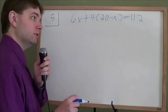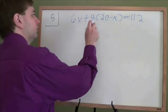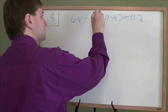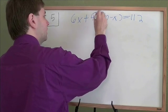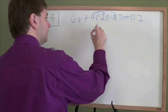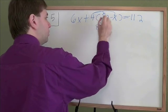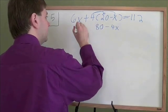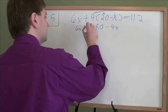So now that we've got our equation, let's start solving it. First thing we can do is deal with these parentheses. When you have a number right outside parentheses, that means it is time to distribute. It means we multiply by each term inside. 4 times 20 is 80. 4 times minus x is minus 4x. The other pieces stay the same.